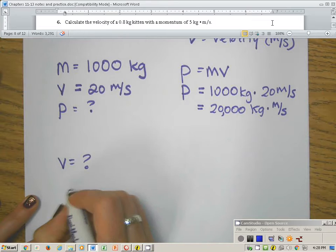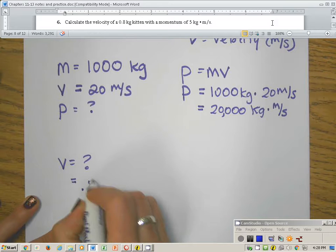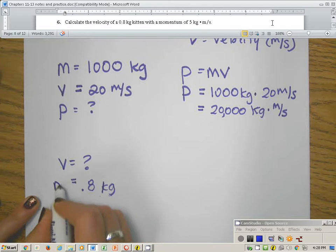It says of a 0.8 kilogram kitten. I was going to have a really big cat there if it's 8 kilograms. So 0.8 kilograms, it doesn't tell me what that is, but I know that kilograms measures mass, so that's an m.